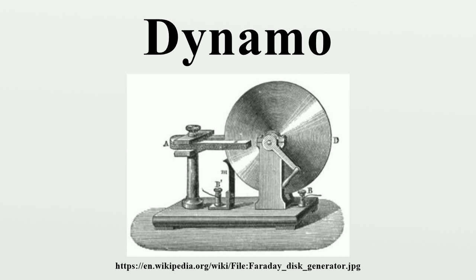The operating principle of electromagnetic generators was discovered in the years 1831 to 1832 by Michael Faraday. The principle, later called Faraday's law, is that an electromotive force is generated in an electrical conductor which encircles a varying magnetic flux. He also built the first electromagnetic generator, called the Faraday disk, a type of homopolar generator, using a copper disk rotating between the poles of a horseshoe magnet, which produced a small DC voltage.